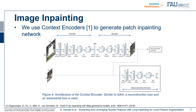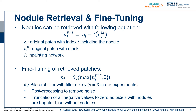Once the image in-painting network is trained, we can retrieve the nodule features using the following equation: we simply subtract the output of the image in-painting network from the original image patch. Afterwards, we apply some fine-tuning to remove possible noise, using a bilateral filter with a filter size of 3. We also truncate all negative values to 0, as pixels with nodules are brighter than those without nodules.